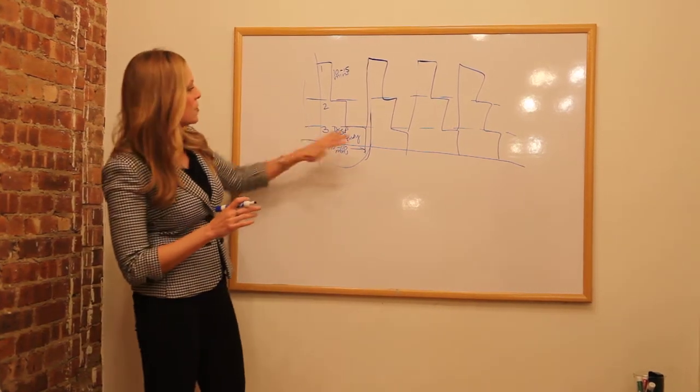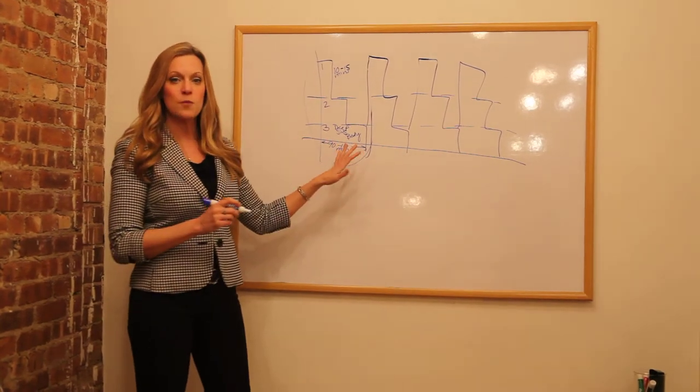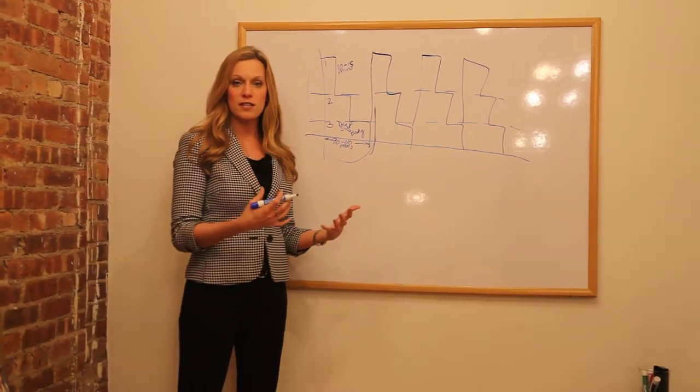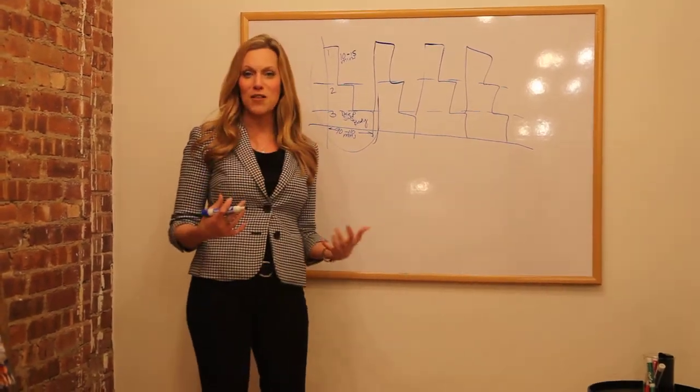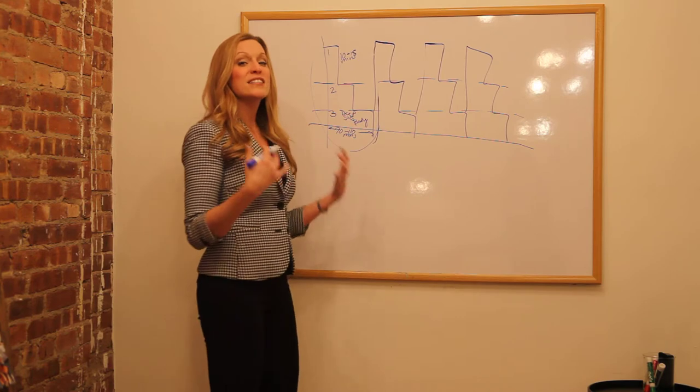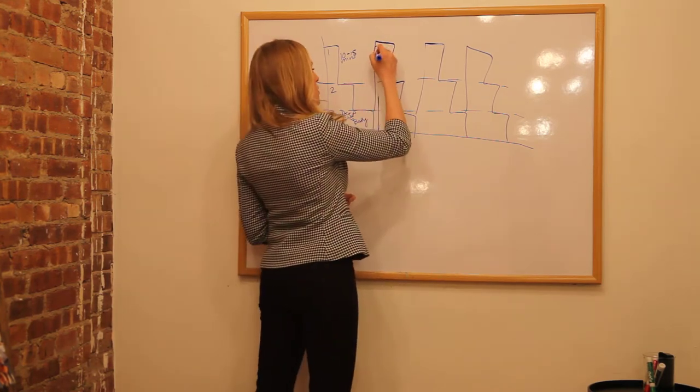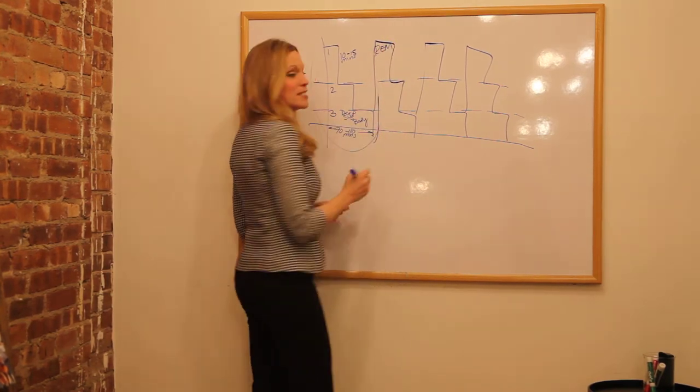What happens is after we get through one cycle of sleep, the cycle is going to start over. But we don't need to go through stage one sleep again because we're not having to fall asleep again. Instead, stage one is now going to be replaced with REM sleep, rapid eye movement sleep.